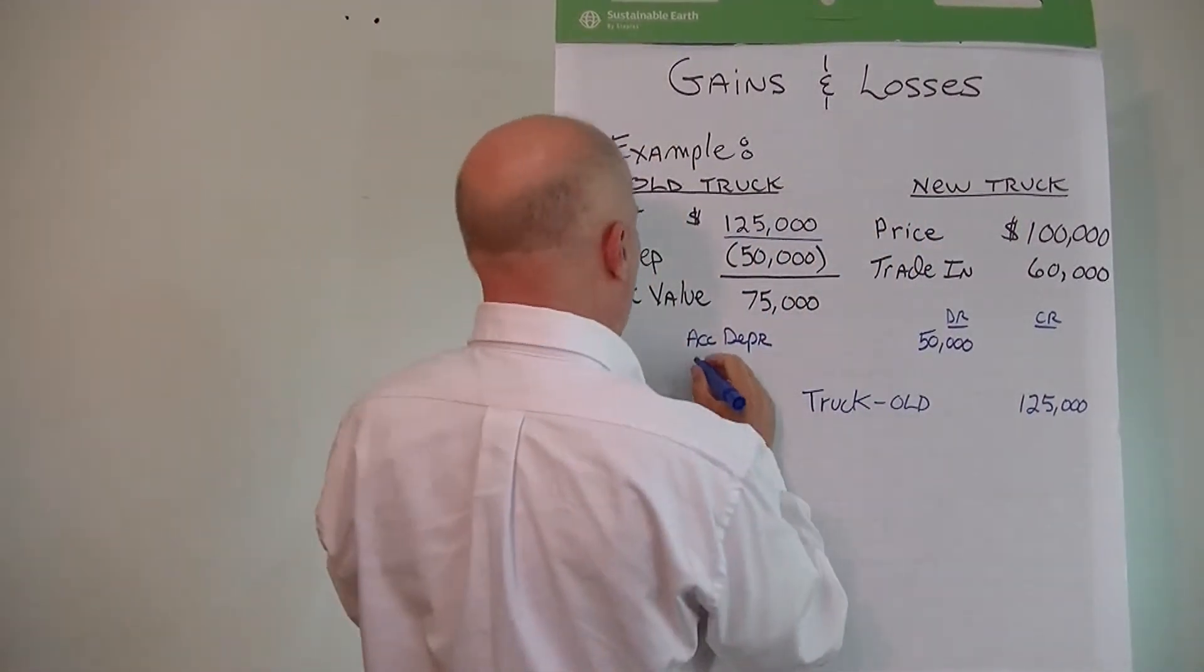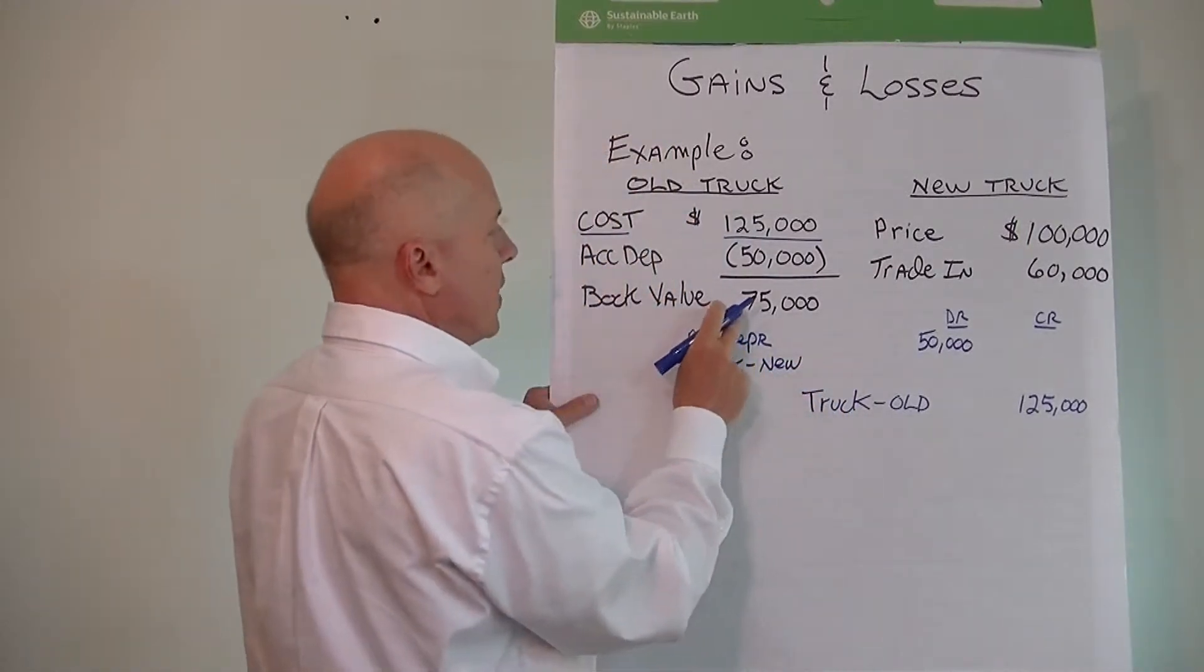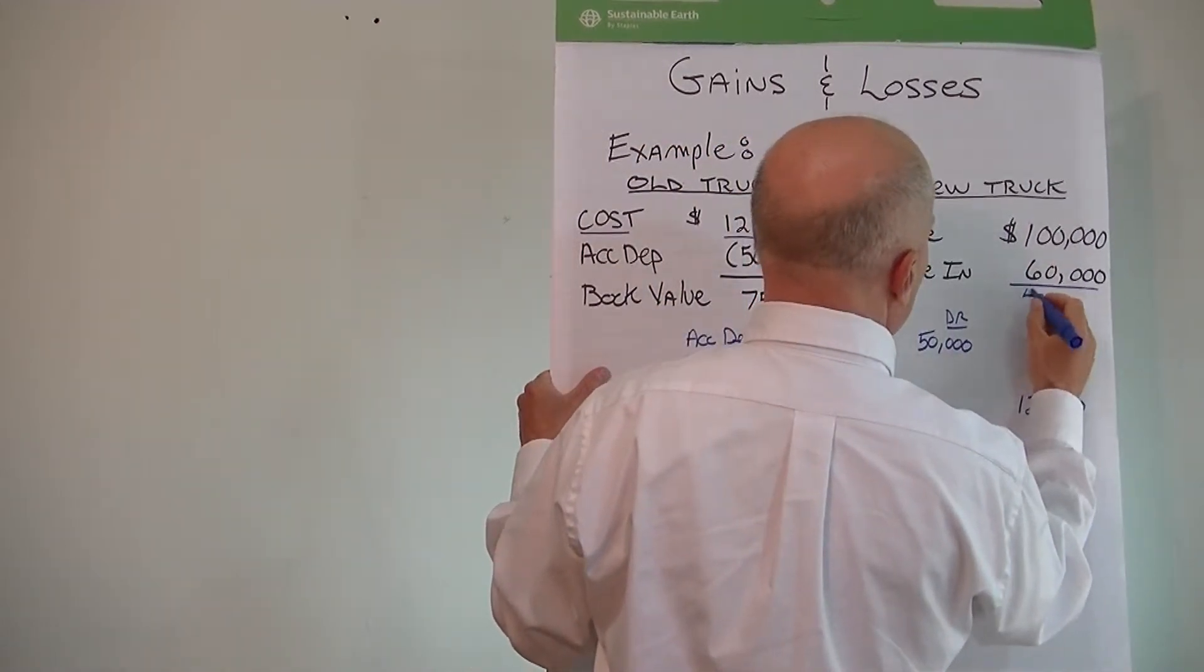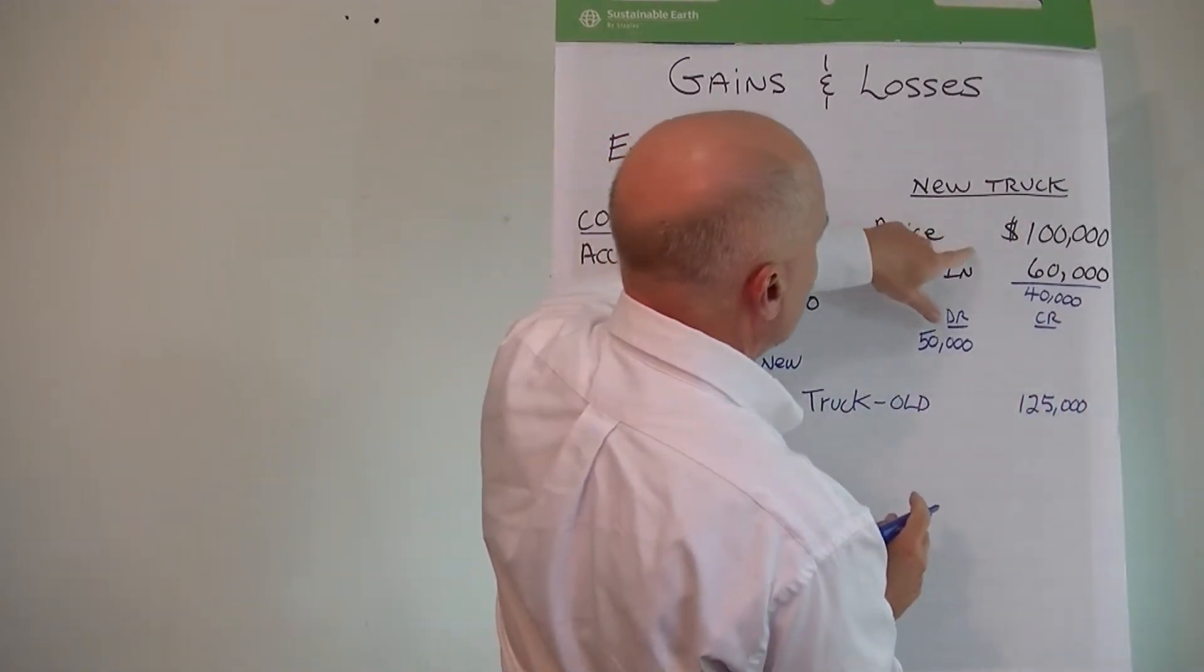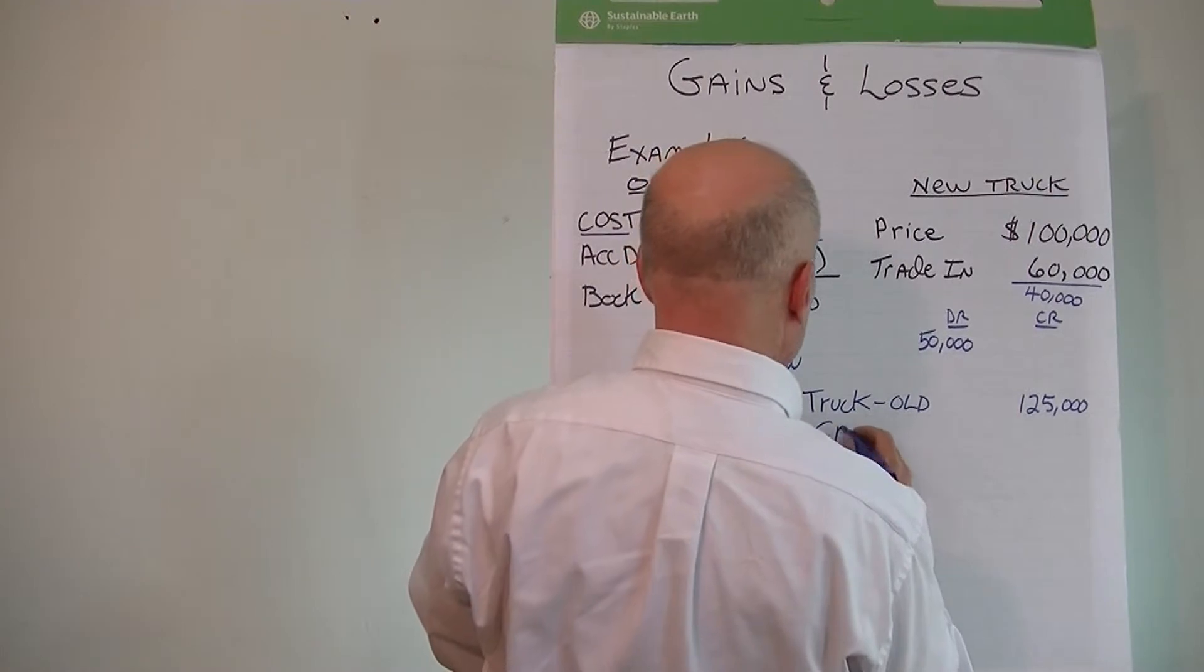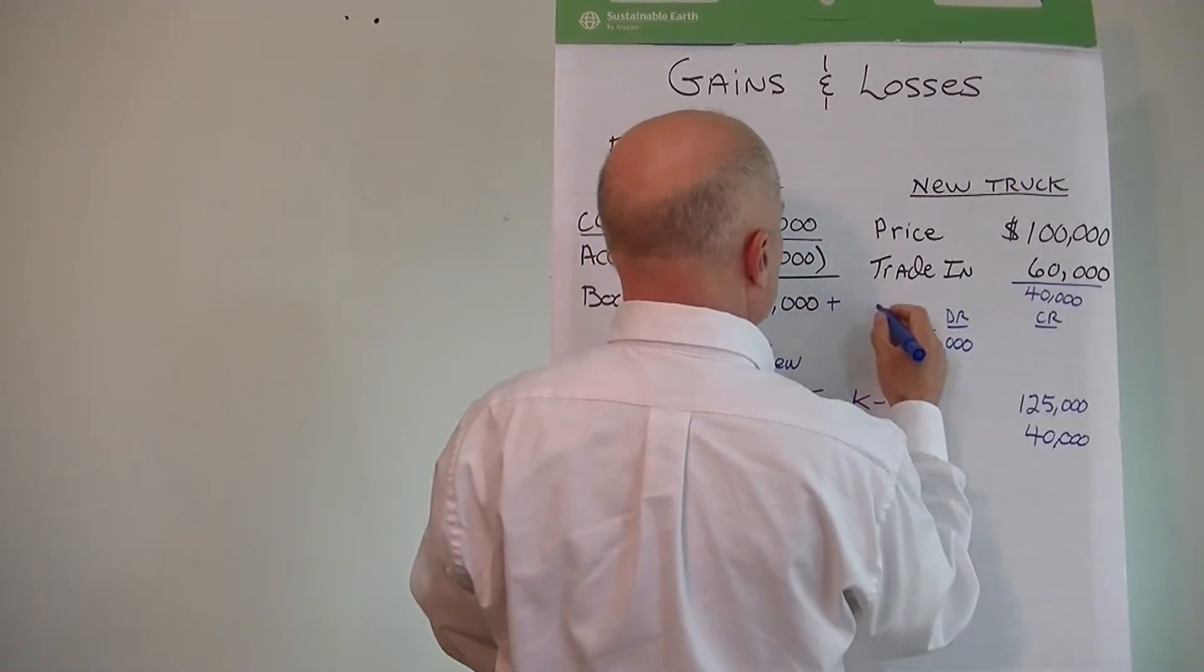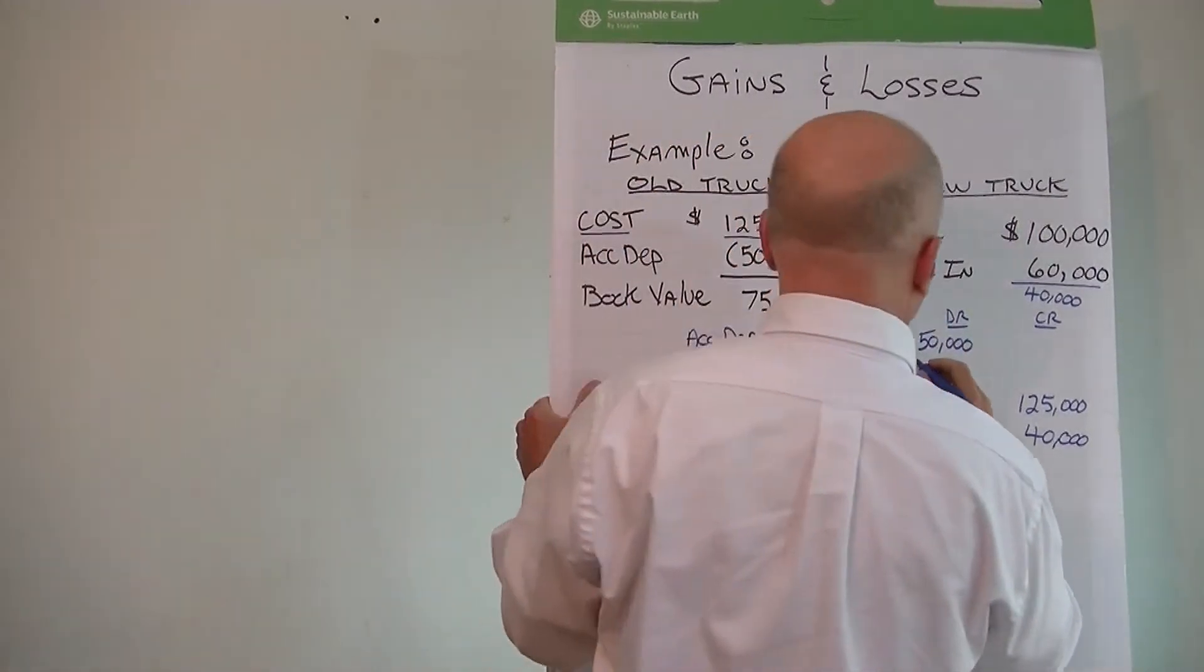The new asset, the truck, the new asset will be put on the books. I'll write the word new here. $75,000 plus the difference between $100,000 and $60,000 is $40,000. So basically what we're saying is the dealer is going to - we have to buy the new truck for this, he'll give us this, we have to put cash out there for $40,000. And if we take this $75,000 plus the difference, is $115,000.